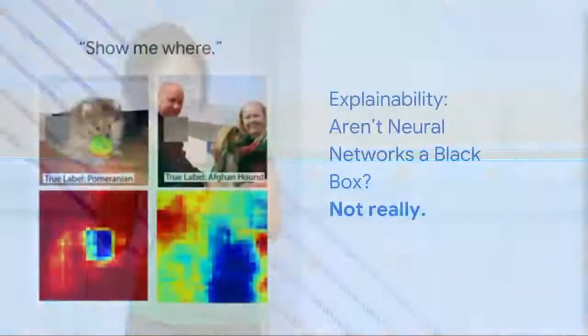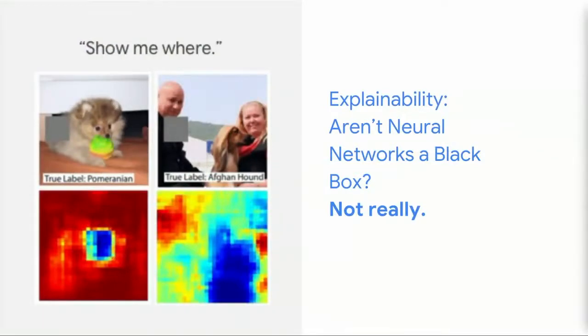Another thing we've been working on is having the networks explain how they're making a prediction. Taking a play out of the consumer world playbook, we started using this technique called 'show me where.' Using an image, we generate a heat map of where the relevant pixels are for a particular prediction. Here you can see a picture of a Pomeranian, and the heat map shows there's something in the face of the Pomeranian that makes it look Pomeranian-y.